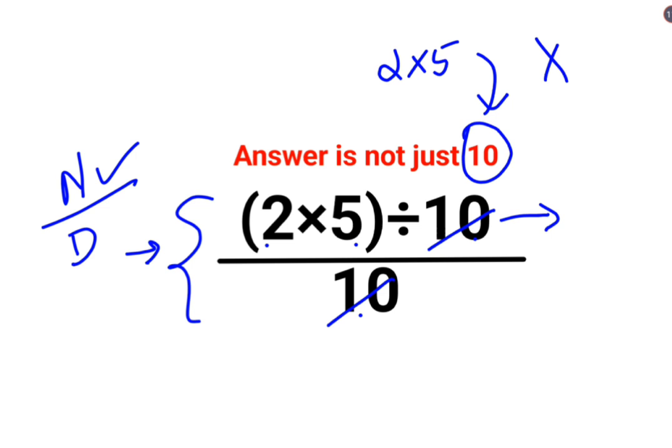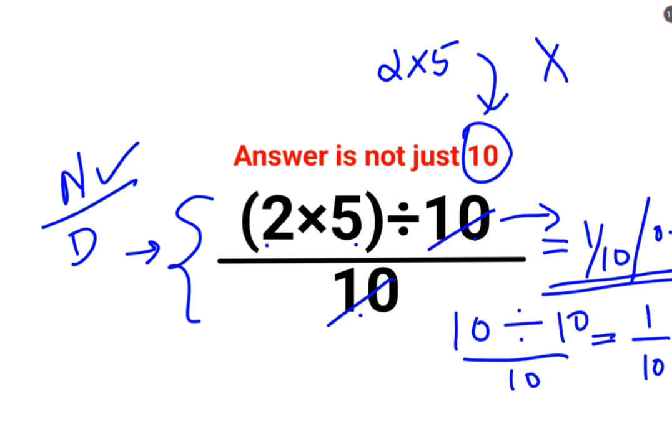So we have 2 multiplied by 5 which is 10 divided by 10 upon 10. So 10 divided by 10 is what? 1. 1 upon 10. The answer for this question is either 1 upon 10 or I can say 0.1. Both of these answers are absolutely correct.